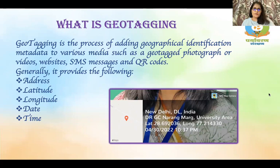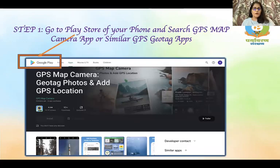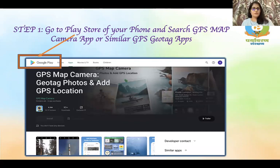So how can you get this app? First of all, you have to go to the Play Store on your phone. In all phones there is a Play Store, and there you can search for GPS Map Camera apps. There are a lot of apps available for this purpose. I have used GPS Map Camera to make this presentation.